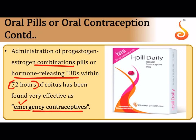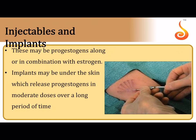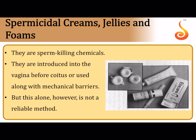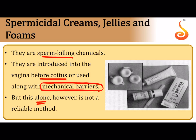Injectable and implant contraceptives contain mostly progestogens. Matchstick-sized capsules are implanted subcutaneously (under the skin) for a prolonged period — as long as they are present, the person will not conceive because these suppress the release of FSH and LH by the pituitary gland, preventing ovulation. Spermicidal creams, jellies, and foams are sperm-killing chemicals introduced into the vagina before coitus; used alone they are not a reliable method and should be combined with mechanical barriers.